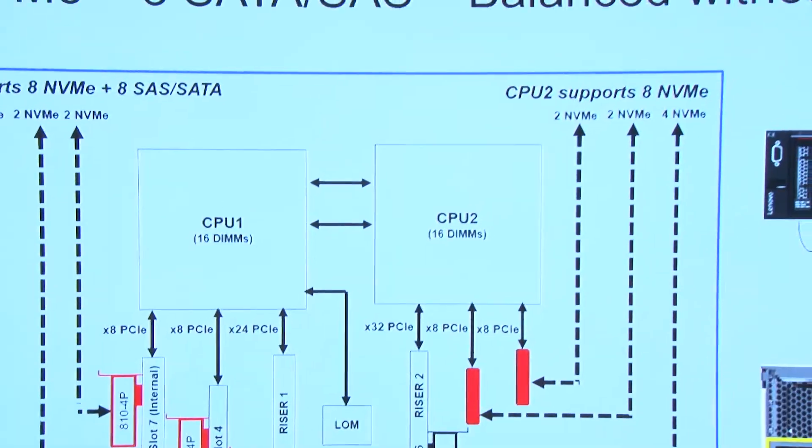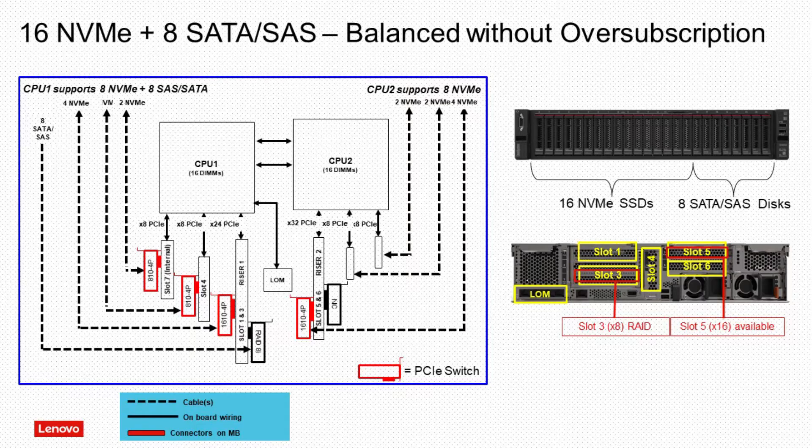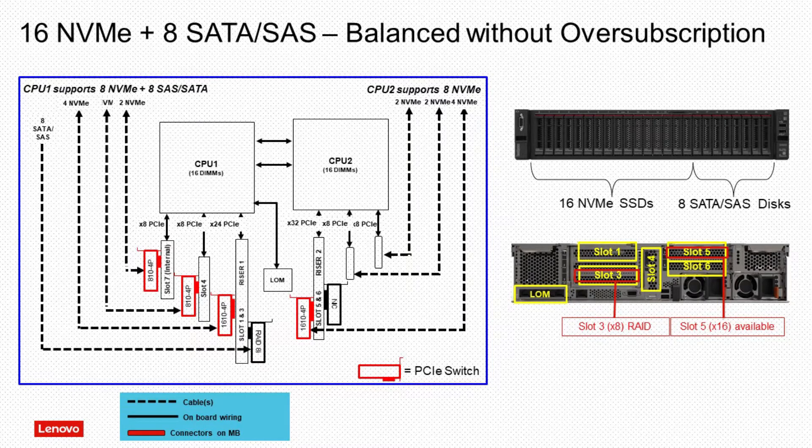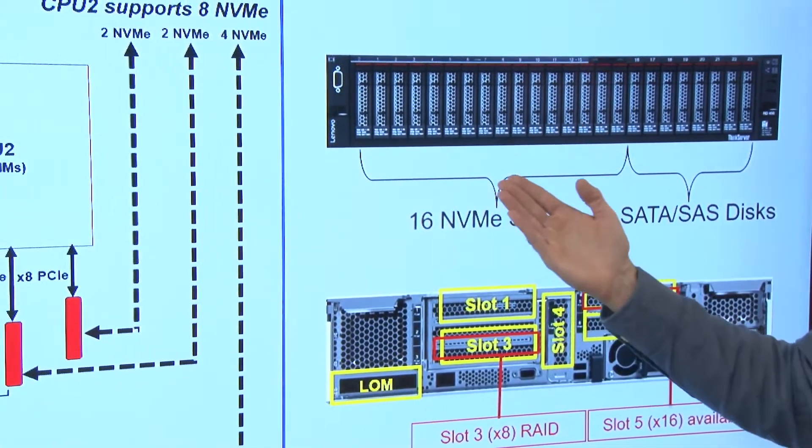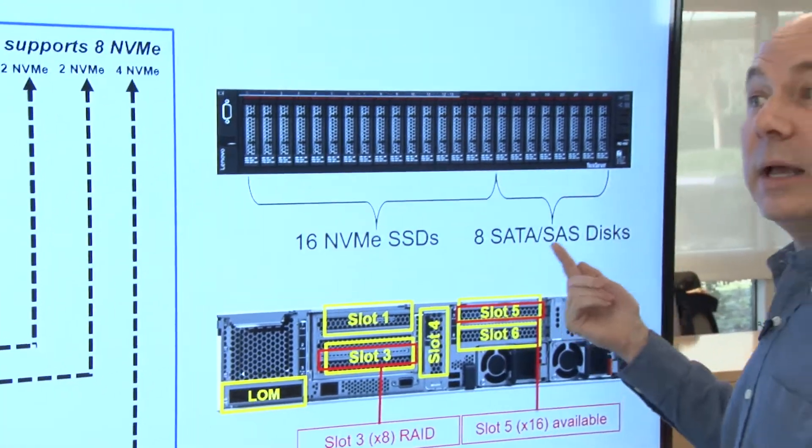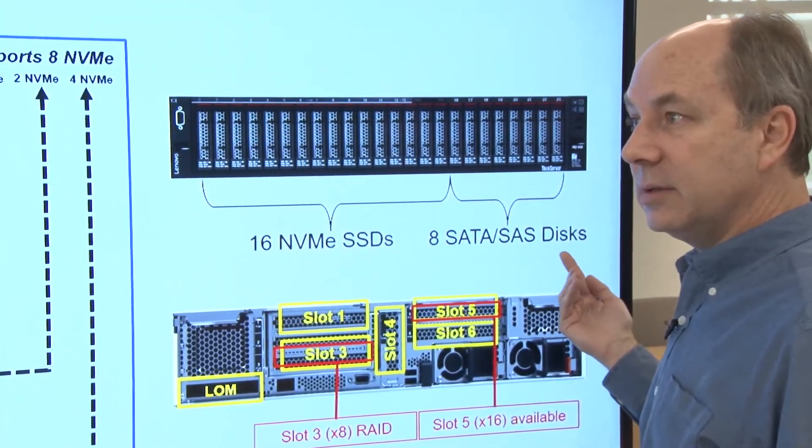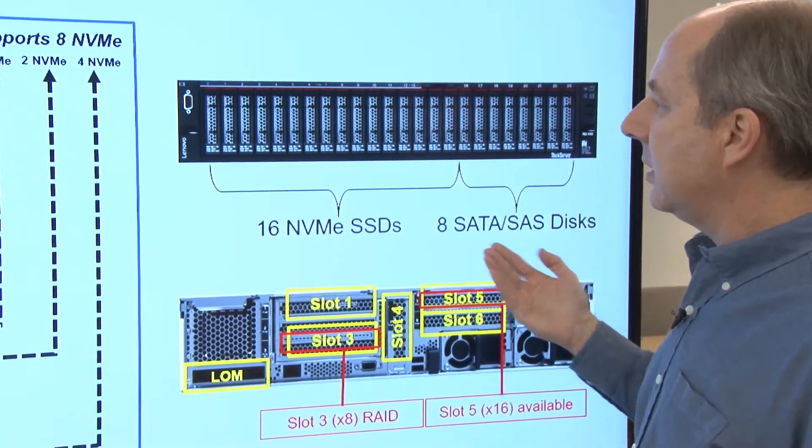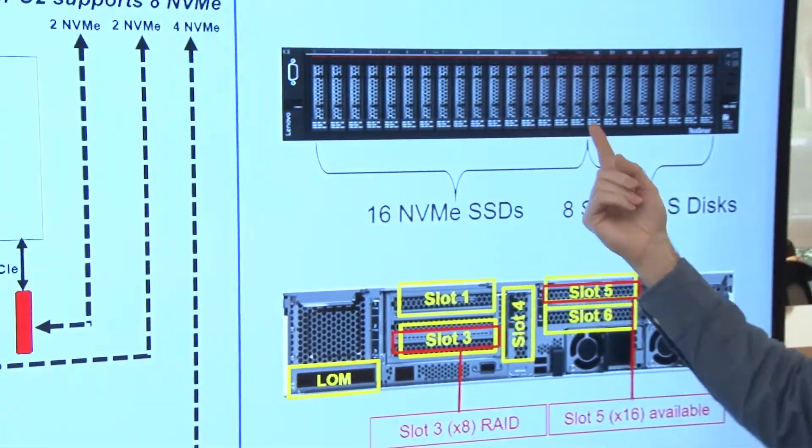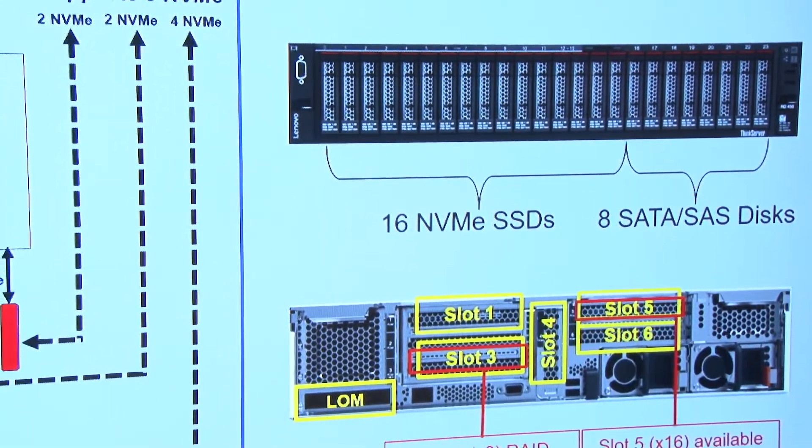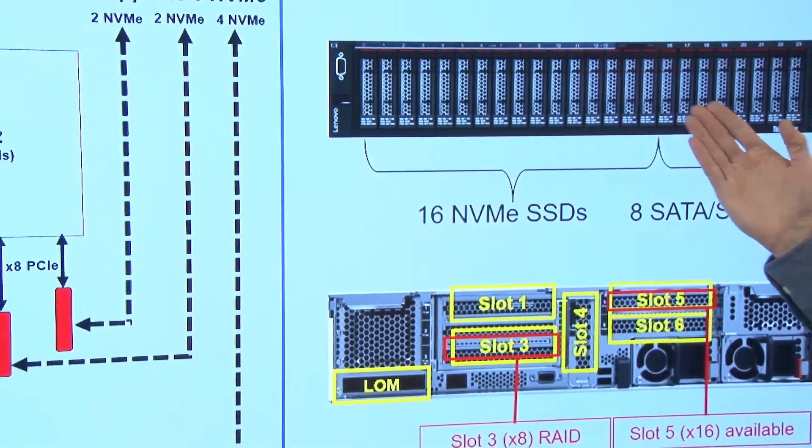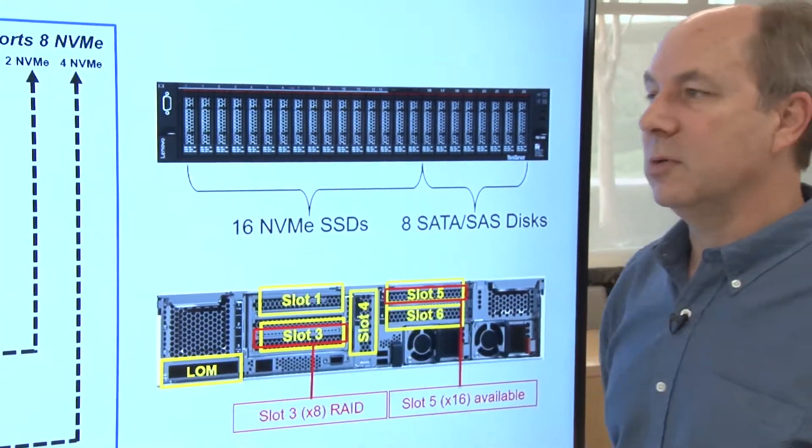So David, this is our 16 NVMe SR650 configuration, and you can see a representation of the drives in the front of the server there. So in this particular configuration, this is the one with 16 NVMe and optionally 8 SAS SATA drives. Correct, that's an optional that you can add all the way up to 24 drives in total.